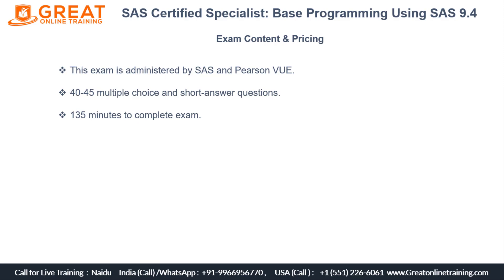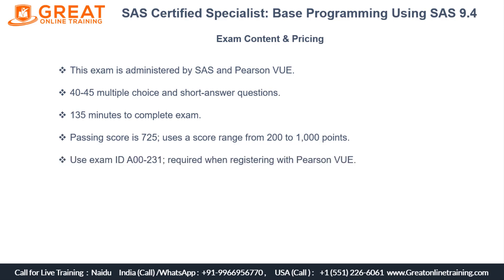After 135 minutes, the window will automatically close, so you need to finish the exam before that. The passing score for this certification exam is 725. The score ranges from 200 to 1000 points, so you must get 725 or above to pass. The exam code for this particular exam — which is a very famous one — is A00-231. You need to use this ID while registering with Pearson VUE when they ask which certification you want to go for.